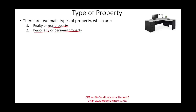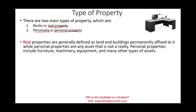We need to differentiate between those two — it's important to understand both. Real property is generally defined as land and buildings that are permanently affixed to the land and cannot be moved. Personal property is any asset that is not real property. Personal property includes furniture, machinery, equipment, and many other types of assets — things you can move around.